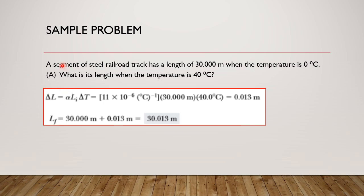We go now to sample problems. Problem: A segment of steel railroad track has a length of 30 meters at a temperature of 0 degrees centigrade. Letter A: what is the length when the temperature is 40 degrees centigrade? This is direct substitution: delta L equals alpha times L sub i times delta T. For steel, alpha is 11 times 10 to the negative 6 per degree centigrade.